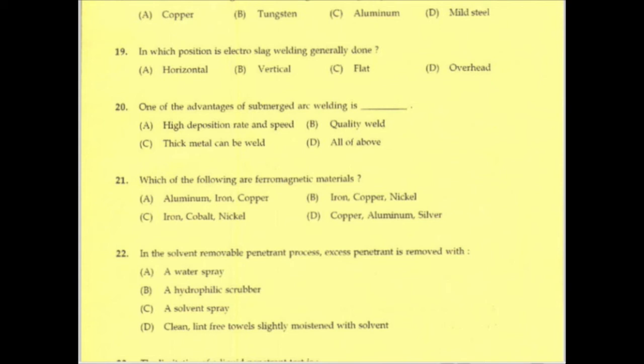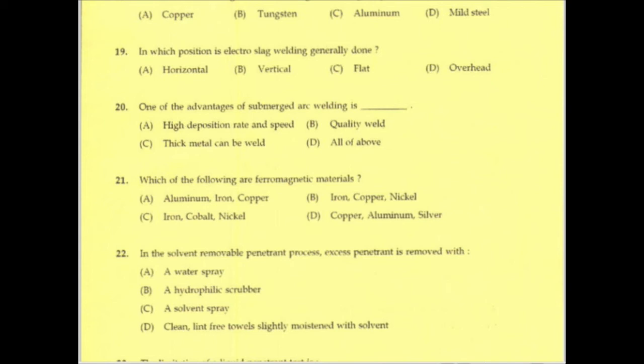One of the advantages of submerged arc welding is high deposition rate and speed, quality of the weld, and the ability to weld thick metals. These are the main advantages of submerged arc welding.